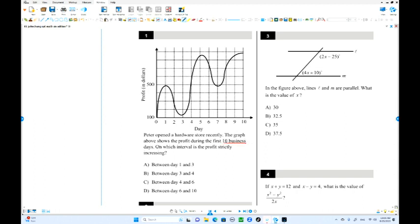There is a question: On which interval is the profit strictly increasing, all the way increasing. That is what we say strict. From 1 to 3, strictly decreasing. That's not the answer. From 3 to 4, from here to here, yes, it is all the way increasing. Choice B is the answer.